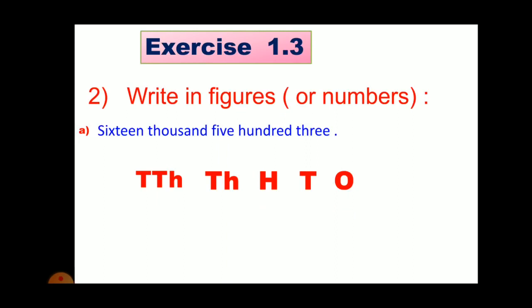16,000. So in the place of thousands, we will write 16. Then we have 500. So at the place of 100, we will write 5. And we have 3, so it will be at 1's place. That is, 3.